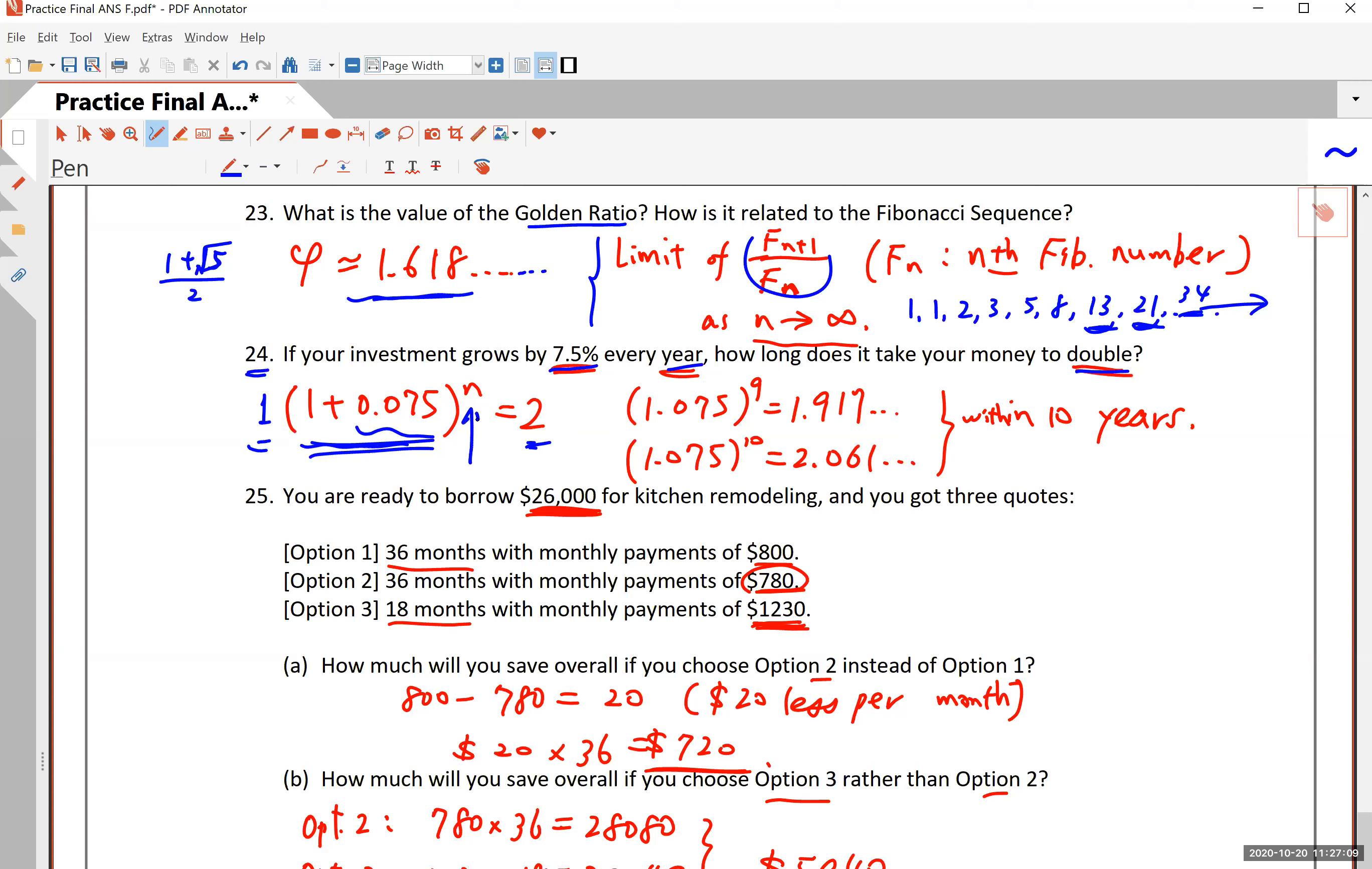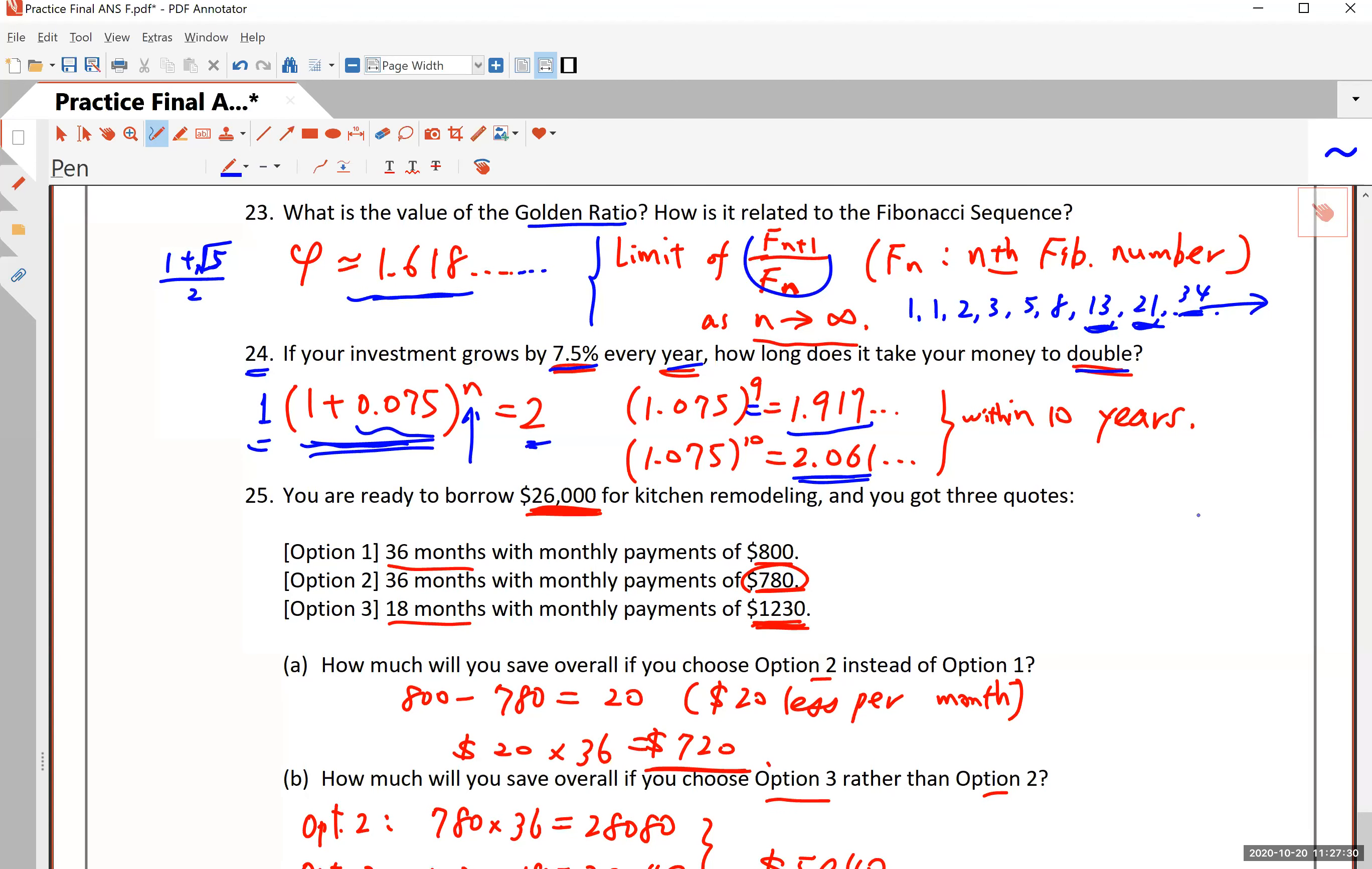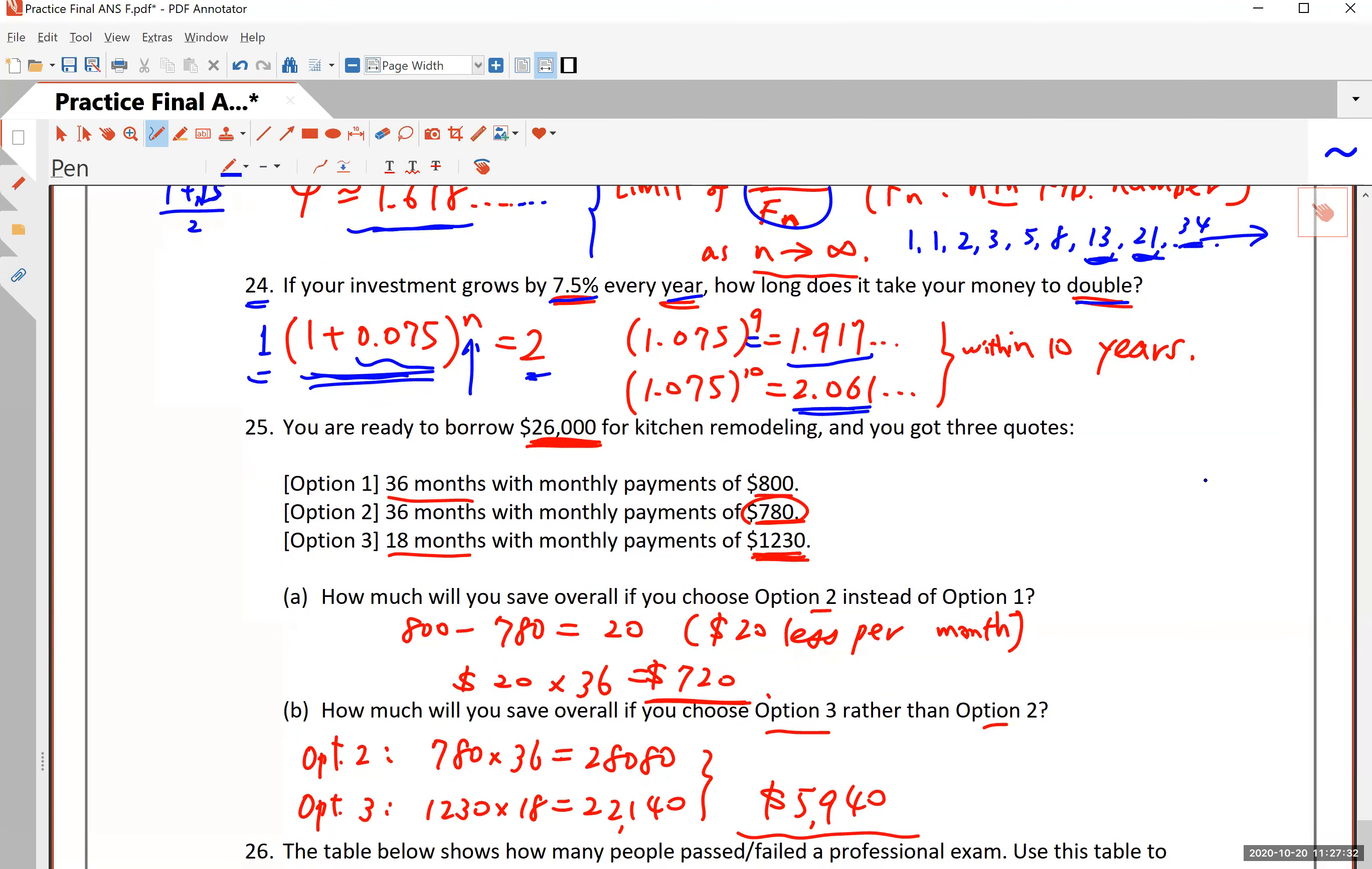Try 10, for instance. 10 would actually work. If you plug in nine, then you get 1.9 something that's very close to two. But if you do 10, then you get something over two. So the answer is 10 years. It's going to be somewhere between nine years and 10 years. But you can safely say it's going to take you about 10 years to double this investment.